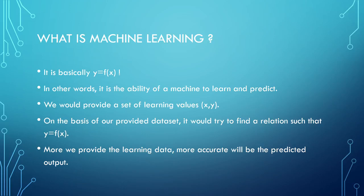The more learning data we provide, the more accurate the predicted output will be. In real life we have a variety of data. We collect a specific type of data — all data must be of the same format — and feed it to a machine learning algorithm. That algorithm finds the relation between x and y, where x and y are both provided data, and creates a function such that y equals f(x). This is the key point behind machine learning.